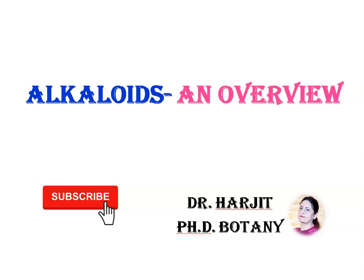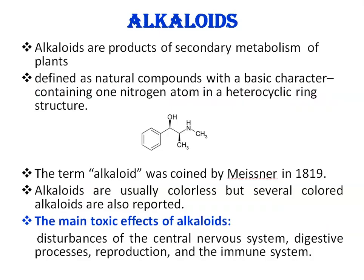Dear students, today we are going to talk about alkaloids. Alkaloids are naturally occurring toxic amines produced by plants, mainly as a defense mechanism to protect themselves against herbivores. Alkaloids are products of secondary metabolism of plants, and are defined as natural compounds with a basic character containing one nitrogen atom in a heterocyclic ring structure.